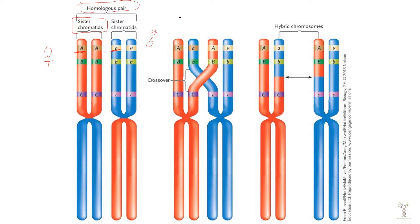During the first meiotic division, during prophase one, homologous chromosomes line up beside each other. Then this process called crossing over occurs. If you forget about this process, then watch the meiosis video.